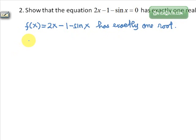So let us check f of 0. 2 times 0 is 0, minus 1, plug in x equals 0 there, sin of 0 is also 0. So f of 0 is negative 1, which is negative.